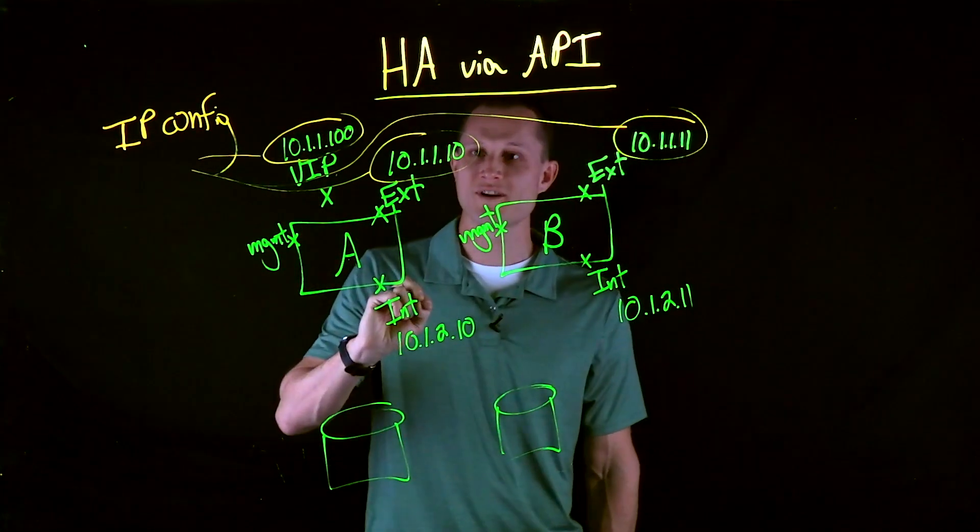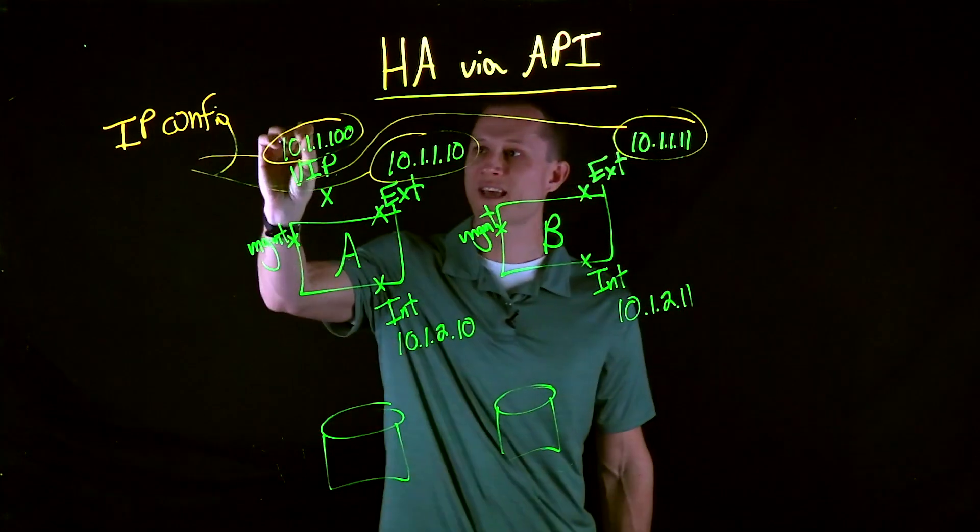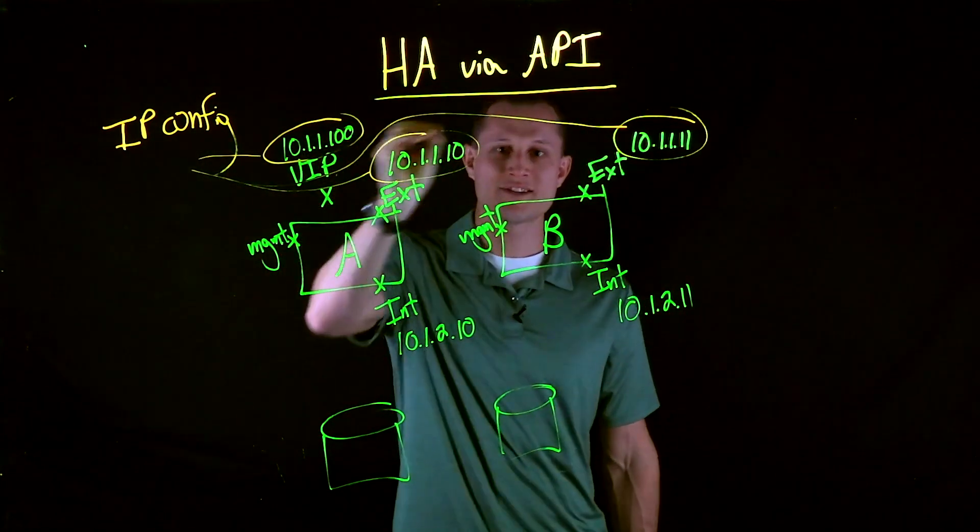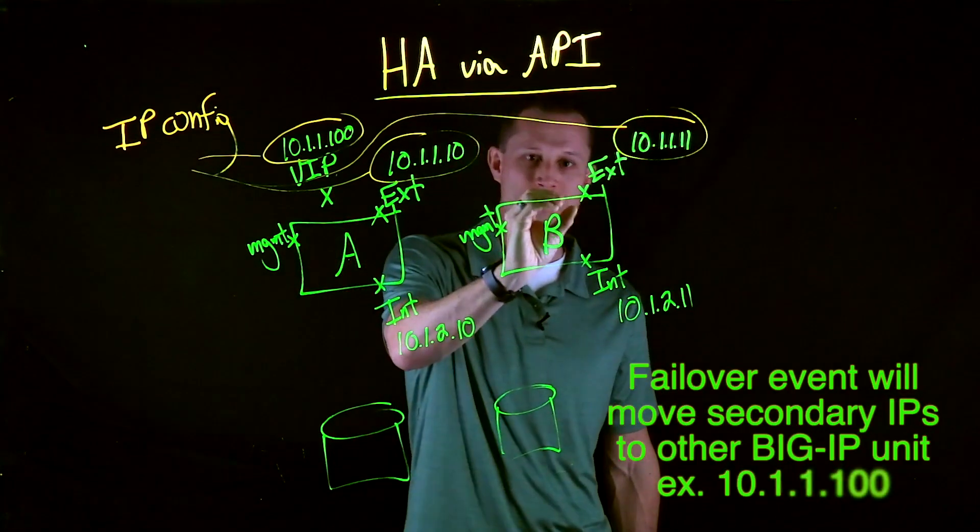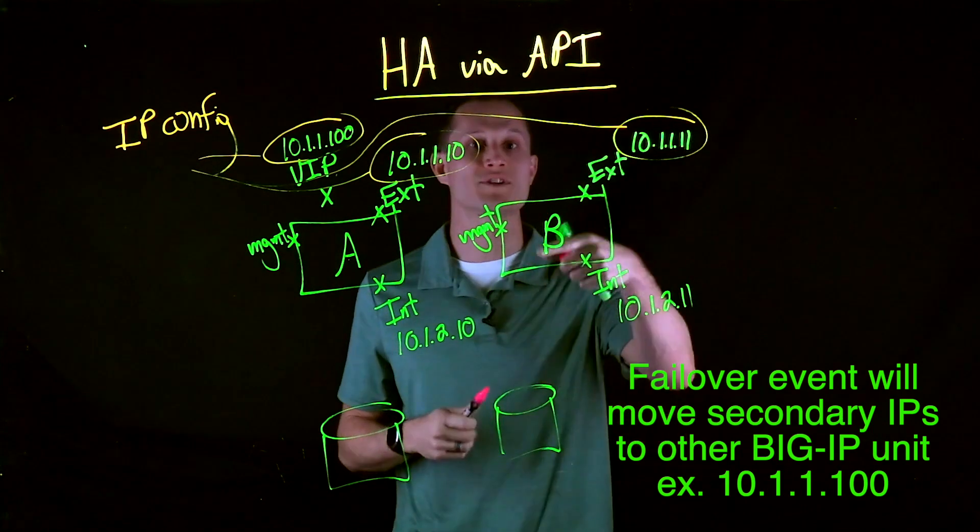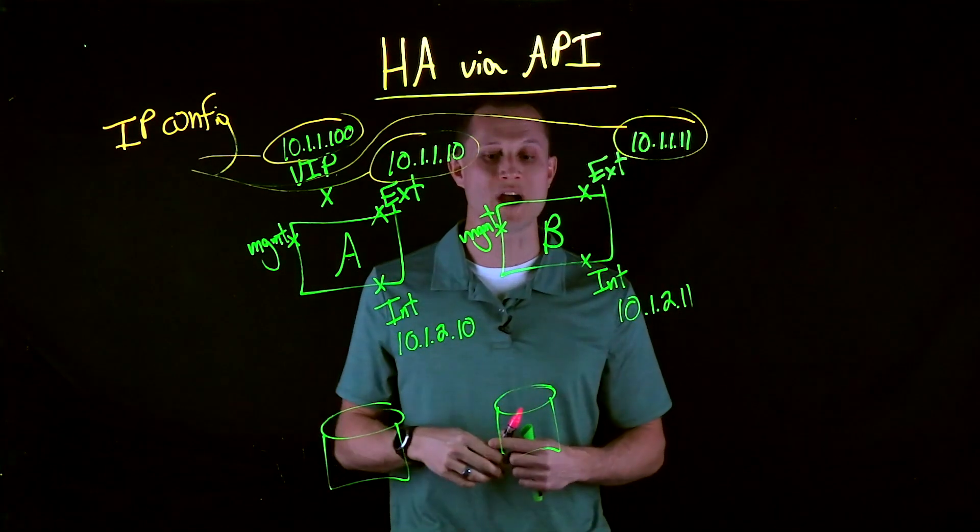So notice here our VIP is our floater. Upon failover event, this 10.1.1.100 will make a transition from unit A to unit B. And when that happens, now traffic is able to flow through unit B, which is now active. And now we can successfully process traffic.